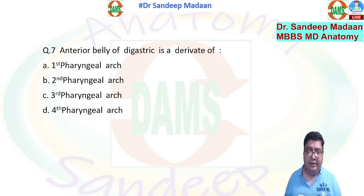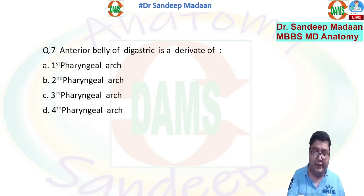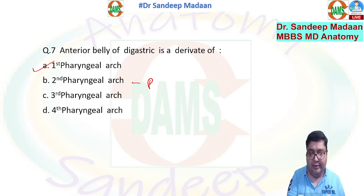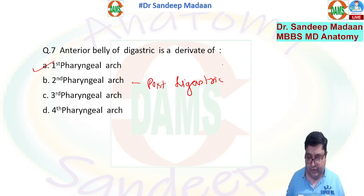The anterior belly of the digastric is a derivative of the first pharyngeal arch, and the posterior belly of the digastric is a derivative of the second pharyngeal arch.